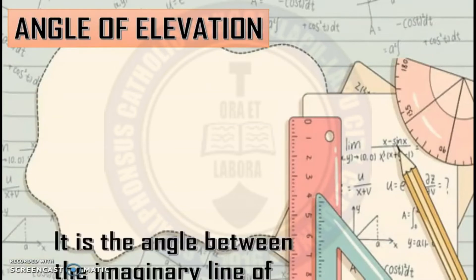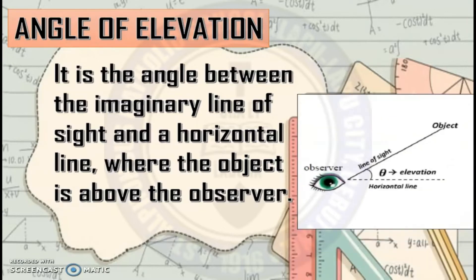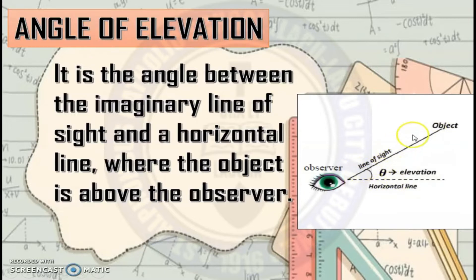Angle of elevation is the angle between the imaginary line of sight and the horizontal line where the object is above the observer. For example, these are your eyes, and you're going to look up at a certain object above you, for example, a kite or an airplane. There's an imaginary horizontal line and your line of sight towards that object. The angle between the horizontal line and the line of sight is your angle of elevation.